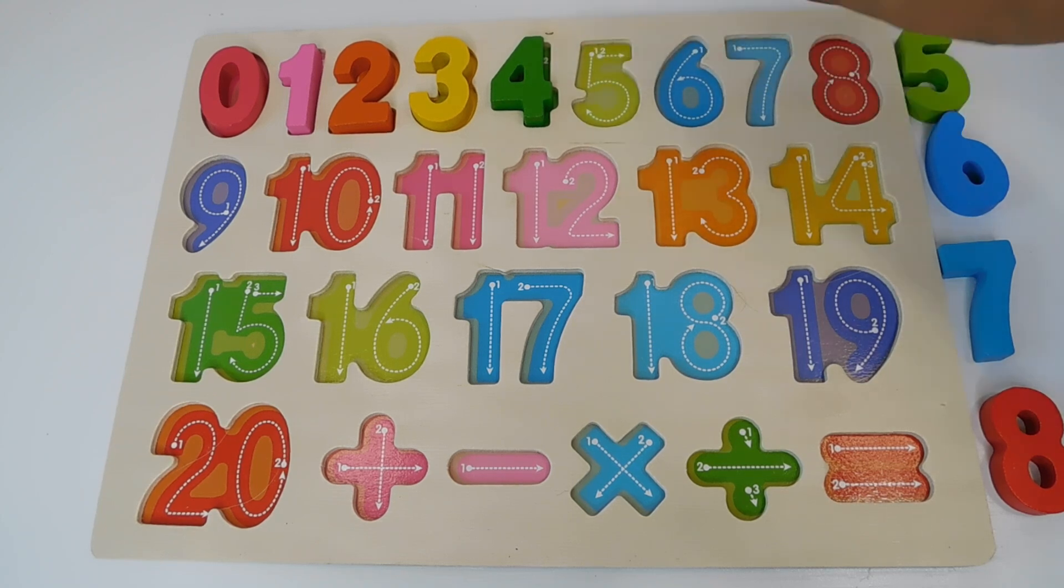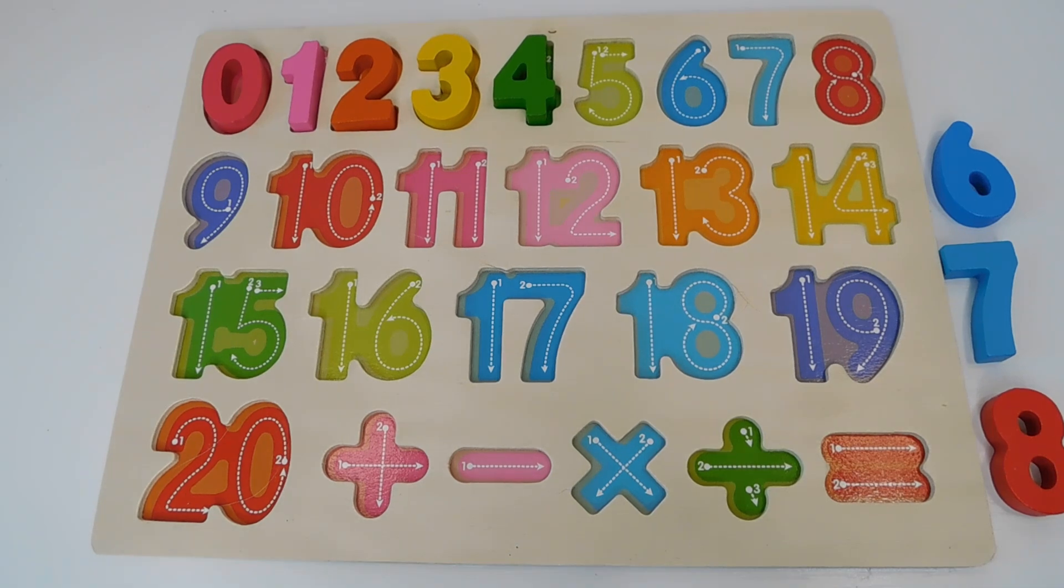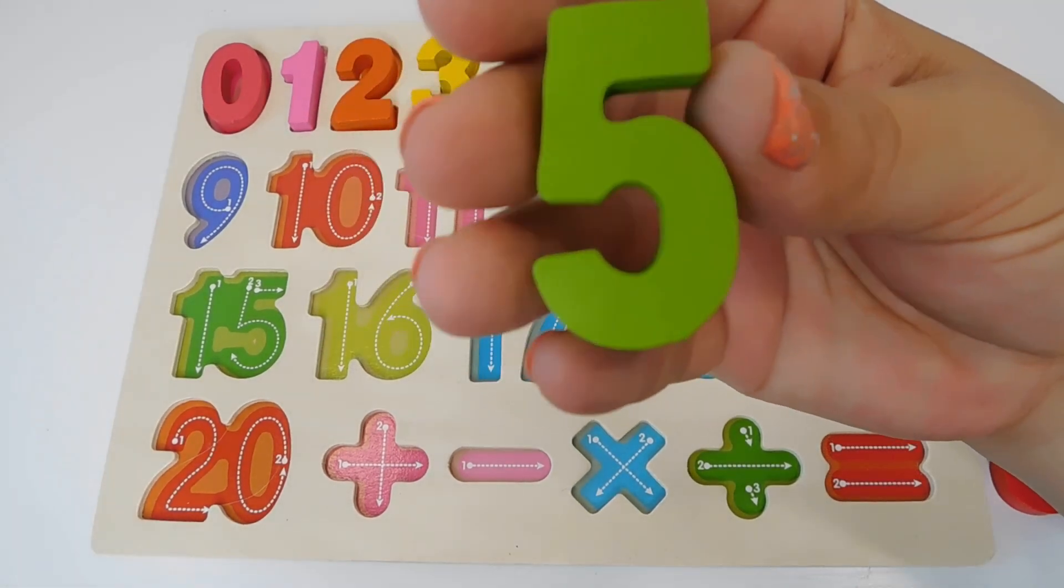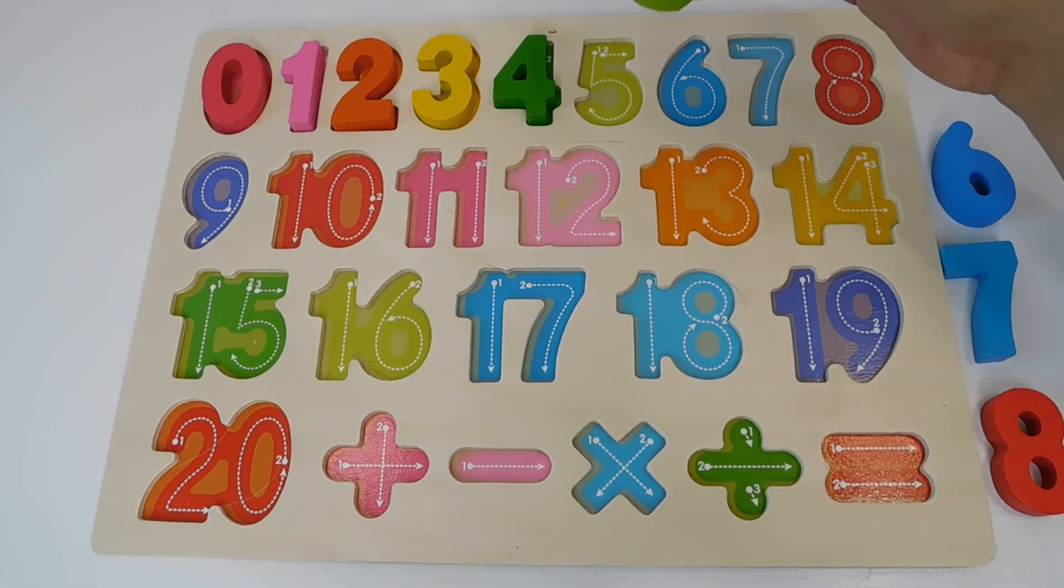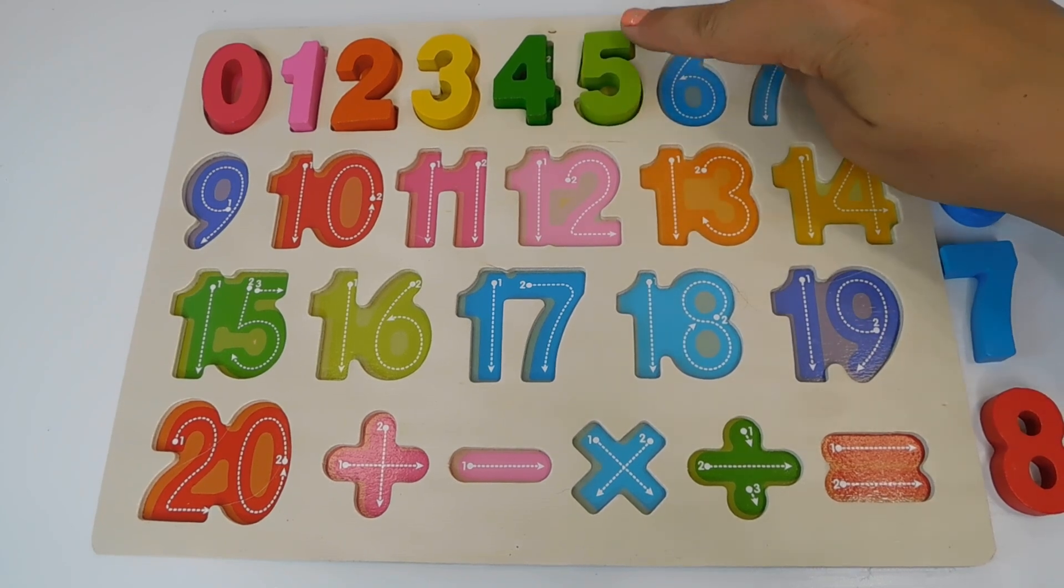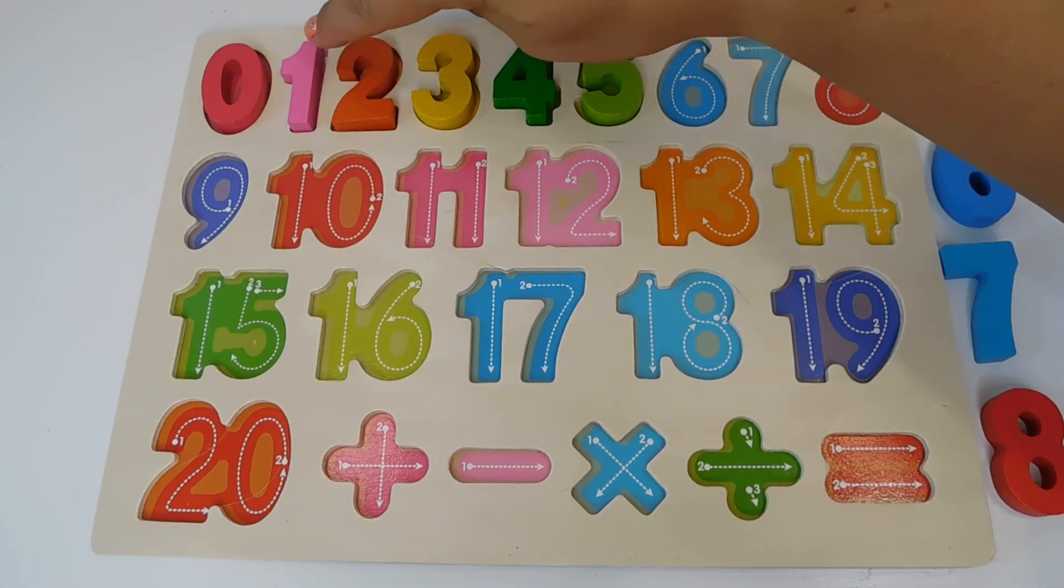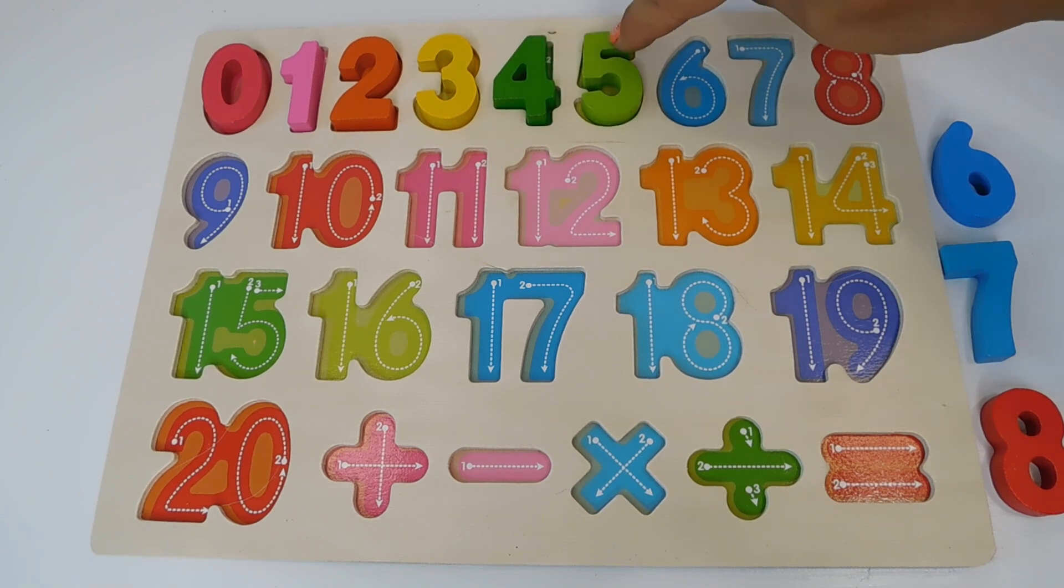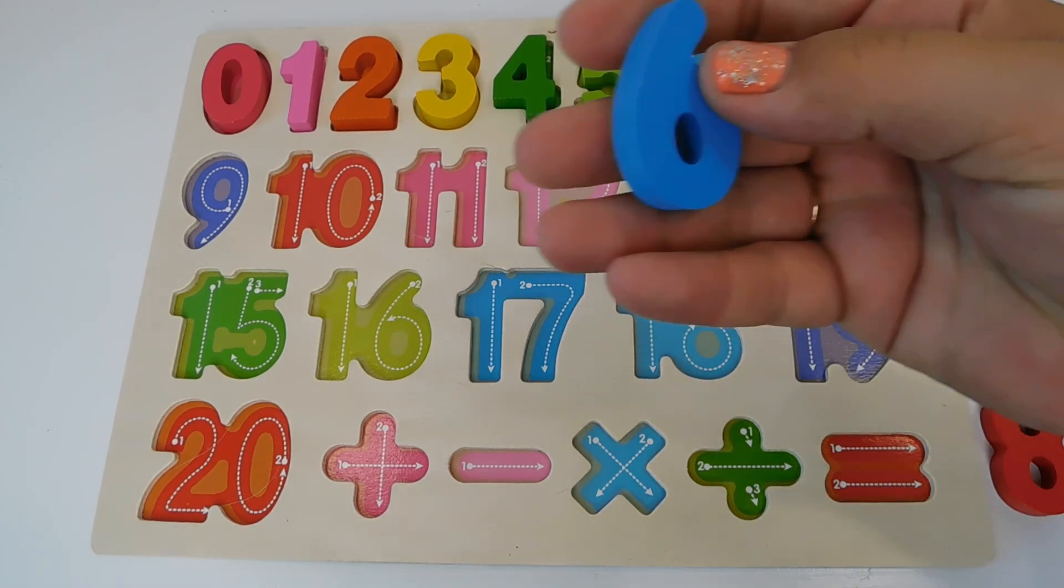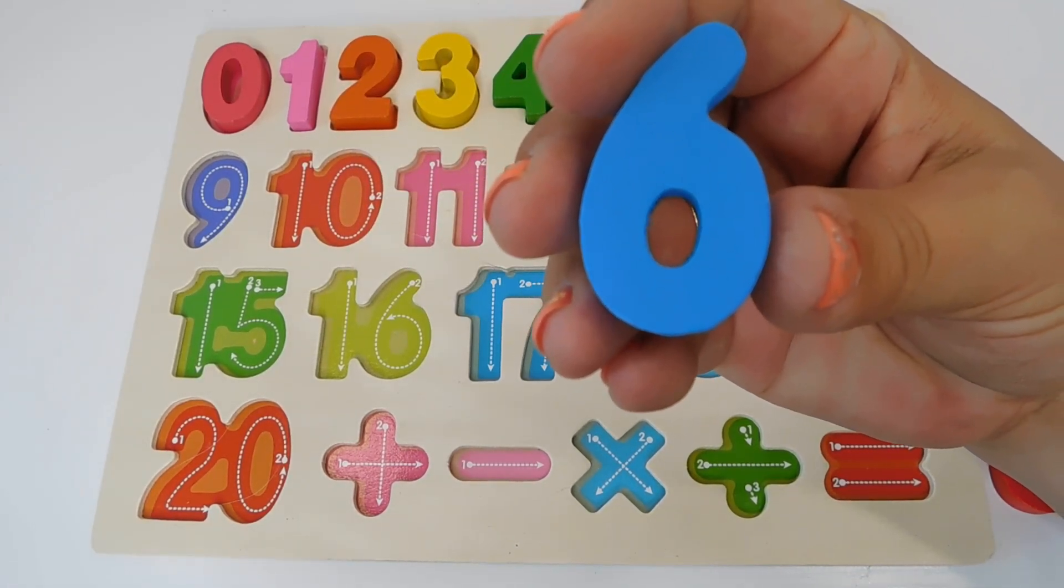Great job. We need our next number. This is a light green 5. Number 5. And it goes here. 5. 0, 1, 2, 3, 4, 5.